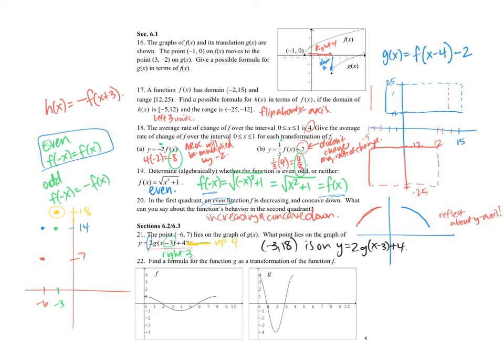So on 22, I want to find a formula for the function g as a transformation of the function f. So the first thing we might notice is that the function has been, so we have this vertical stretch by a factor of 4, and you have a horizontal compression by a factor of 2. Well, it's half as big, so instead of going to 8 it goes to 4.